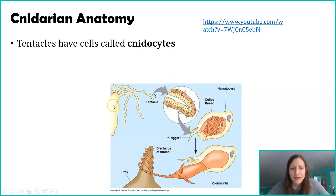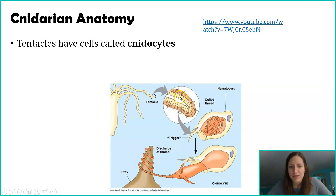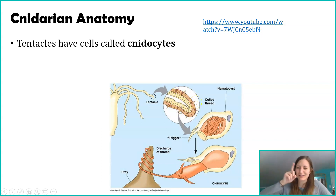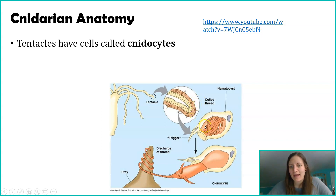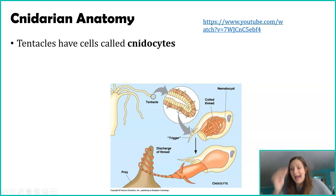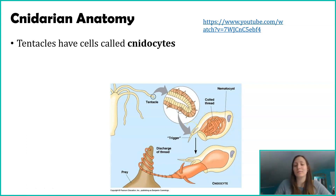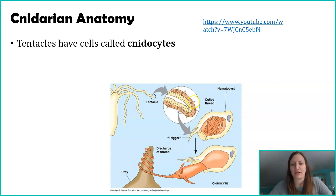Looking at this picture, it's showing a sea anemone zoomed into a tentacle where you can see seven cnidocytes — they're the things that have a little pointy part at the end. This other picture is just isolating a single cnidocyte cell as it would appear within the tentacle.